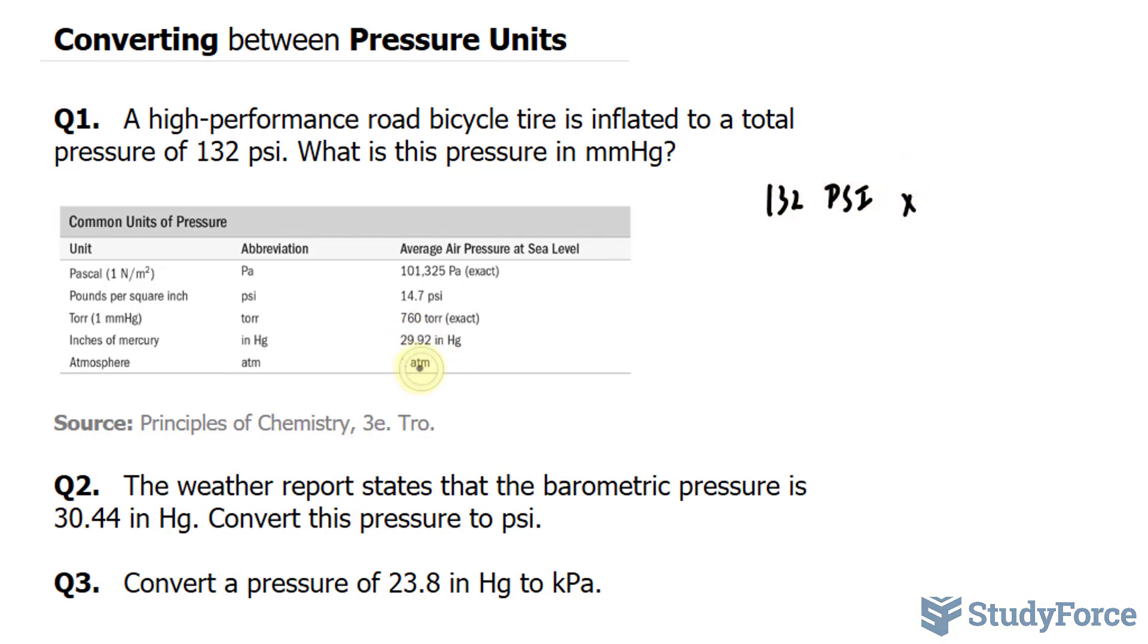we know that one atmosphere is equal to 14.7 psi. So I'll multiply this by 1 atm over 14.7 psi. And what this will do is convert this unit into atmospheres. So now that I have it in atmospheres, I'm not going to multiply this out yet. I'll wait for the next conversion. And the next conversion will be 1 atm per every 760 torr, which is 1 mmHg.